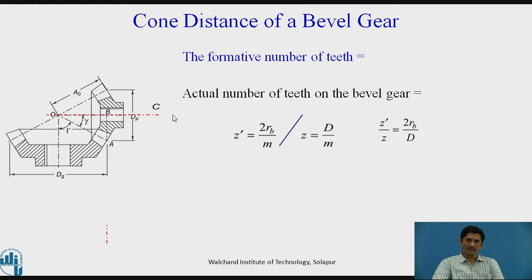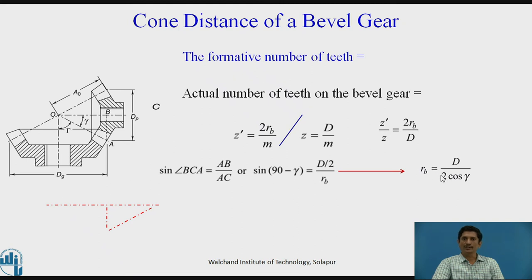Now, let us do this construction. OC is the line. Then AB join and point A join to C. In this triangle BCA, sine of that angle is AB upon AC or we can write that sine of 90 minus gamma equals D by 2 upon Rb, or back cone radius equals D upon 2 cos gamma. Let us put this value of Rb in the equation of Z dash upon Z. The equation then simplifies and we can get Z dash equals Z upon cos gamma. It is the relation between virtual number of teeth or formative number of teeth and actual number of teeth which is related by 1 upon cos gamma.